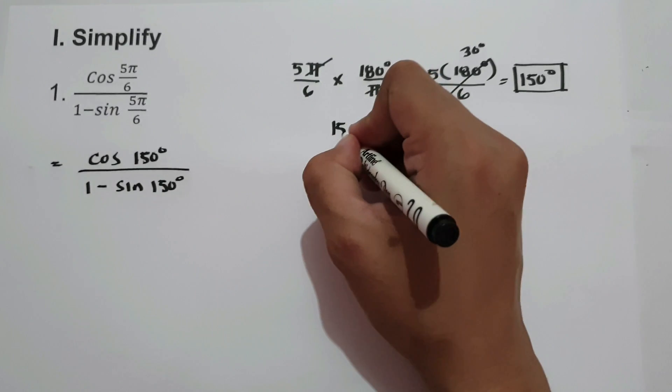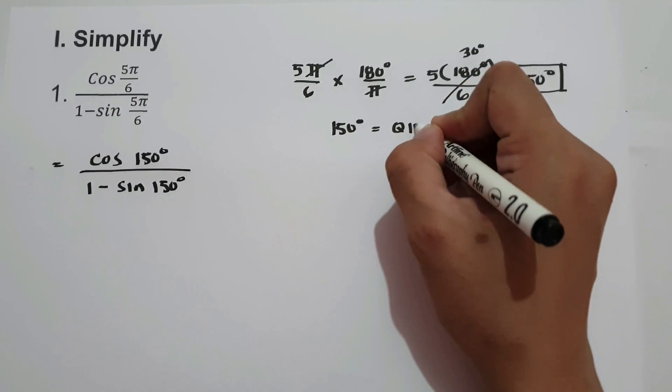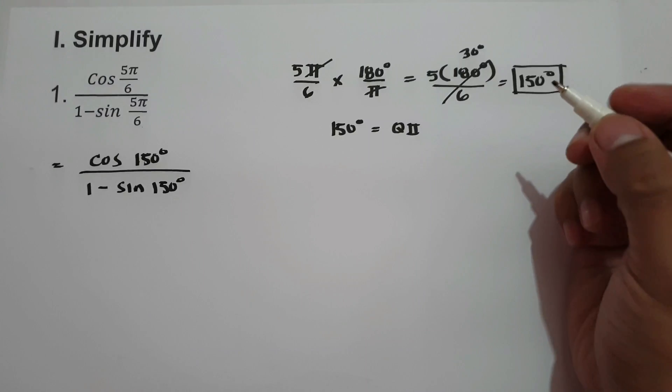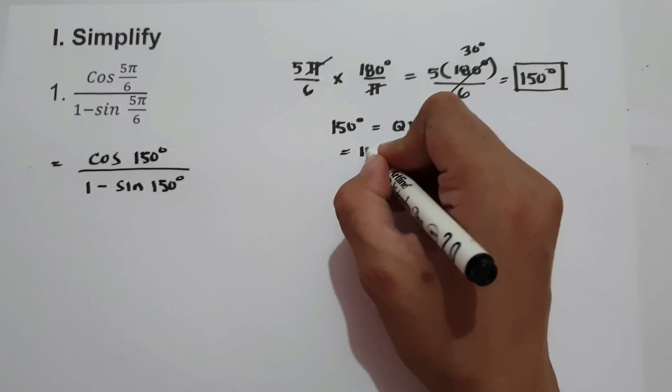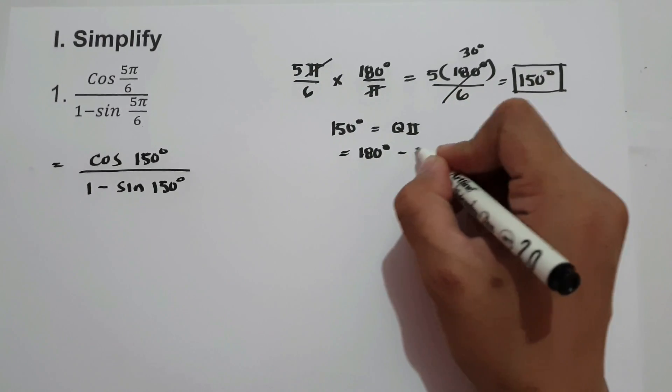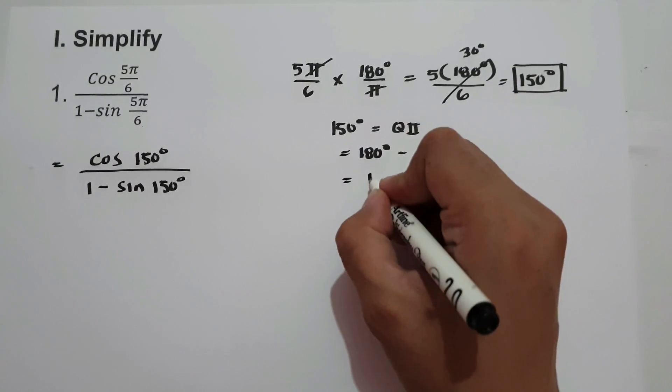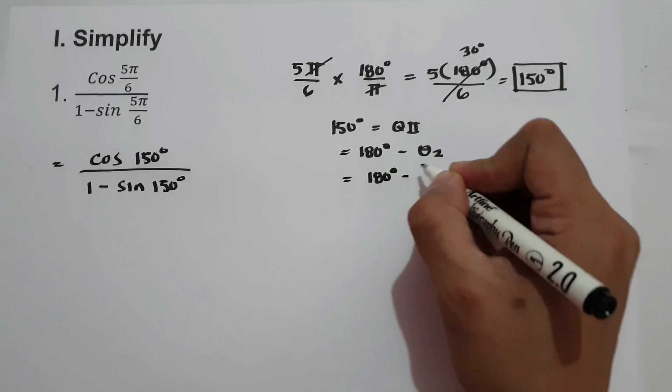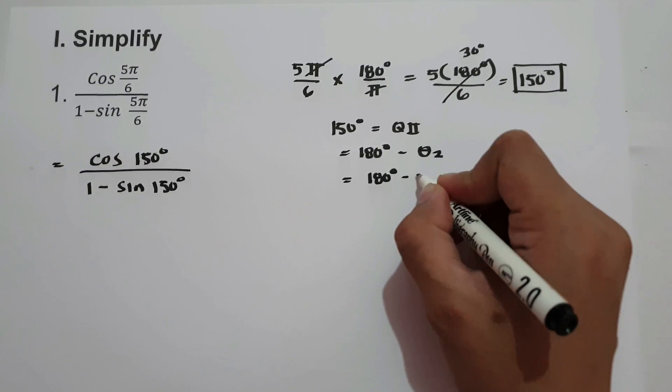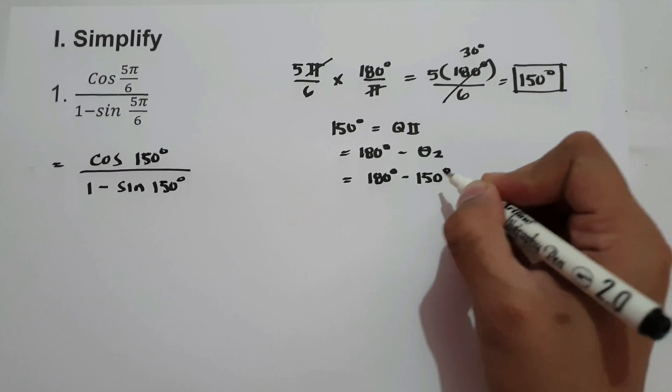150 degrees is located in quadrant 2. The reference angle in quadrant 2 is 180 degrees minus the given angle in quadrant 2. So we are going to have 180 degrees minus the given angle in quadrant 2, that is 150 degrees.